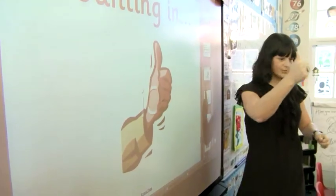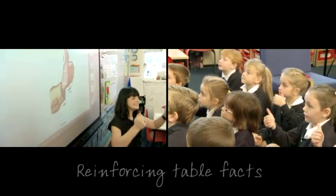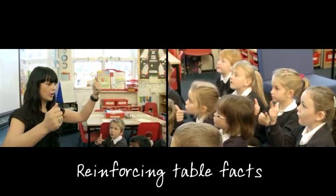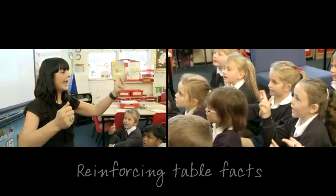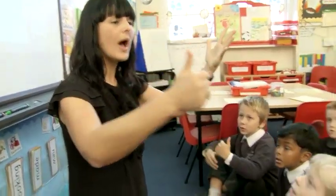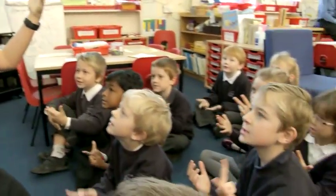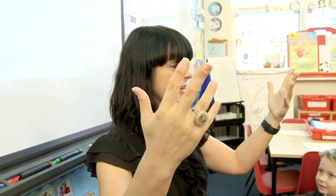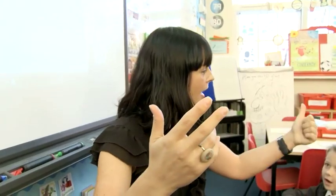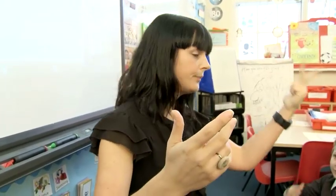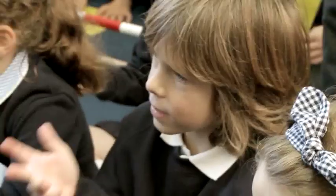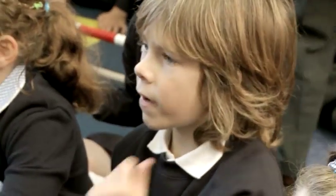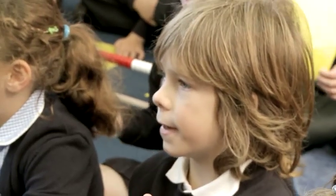Right, thumbs ready. Counting in twos: two, four, six, eight, ten, twelve, fourteen, sixteen, eighteen, twenty. And in fives, ready? Five, ten. At year two level, it's knowing to start with the twos, fives and tens to start with.